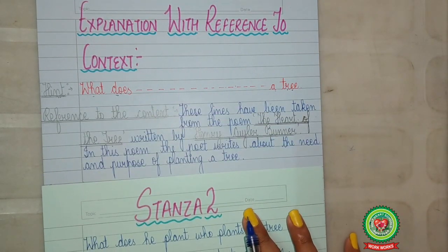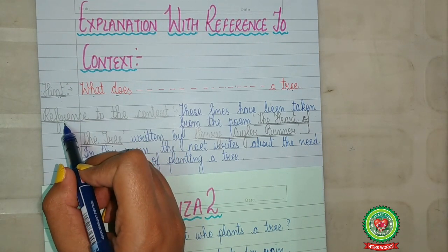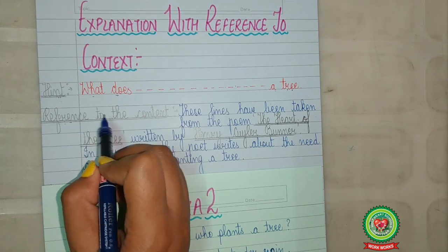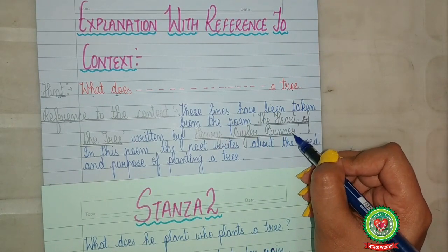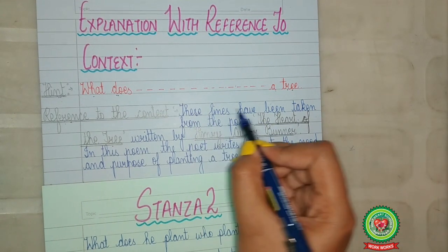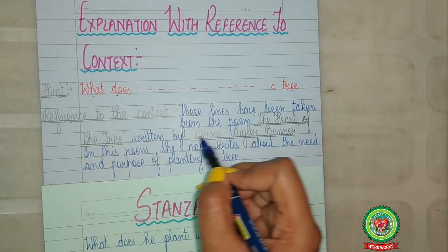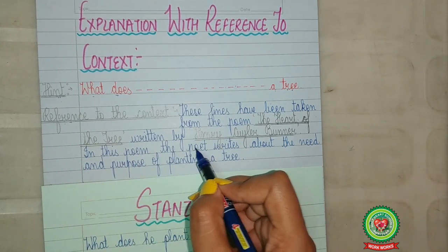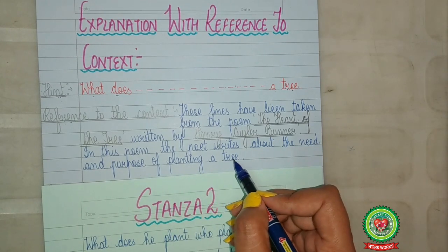We will write down the reference to context. It should be written outside the margin line just under the hint, with a pencil and underlined. For writing the reference to context, we will write the name of the poem, the name of the poet, and what the poet wants to tell us. These lines have been taken from the poem 'The Heart of the Tree' written by Henry Kyler Burnham. In this poem, the poet writes about the need and the purpose of planting a tree.